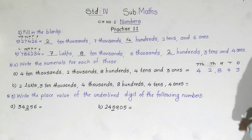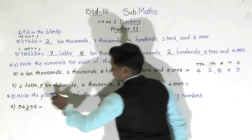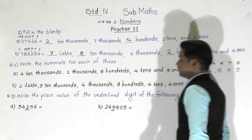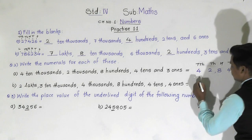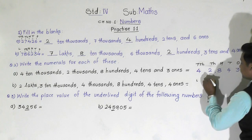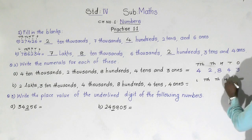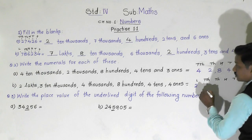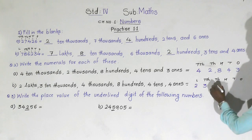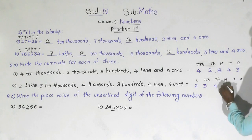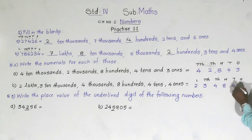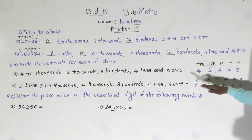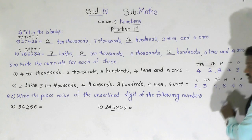Similarly, in the next one: two lakh, three ten thousands, four thousands, eight hundreds, four tens, and four ones. The highest place is lakh. So writing from lakh down: two lakhs, thirty-four thousands, eight hundreds, four tens, four ones. The numeral is two lakh thirty-four thousand eight hundred and forty-four.